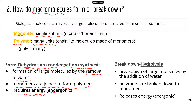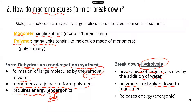"Endo" means in, so energy is going in — you need to provide energy. The reverse chemical reaction, the opposite, is hydrolysis. In hydrolysis, you provide water — which is the opposite of dehydration. In dehydration synthesis you remove water from the monomers, but in hydrolysis, if you want to break down the large molecule, you provide water and the polymer is broken down to monomers. This chemical reaction releases energy, making it an exergonic reaction — "exer" means out, so energy is coming out.